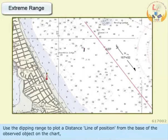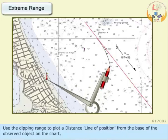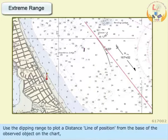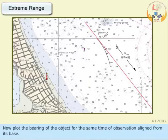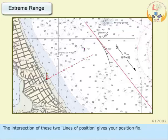Use the dipping range to plot a distance line of position from the base of the observed object on the chart, which is a circle with radius as the measured distance. Then plot the bearing of the object for the same time of observation, aligned from its base. The intersection of these two lines of position gives you a position fix.